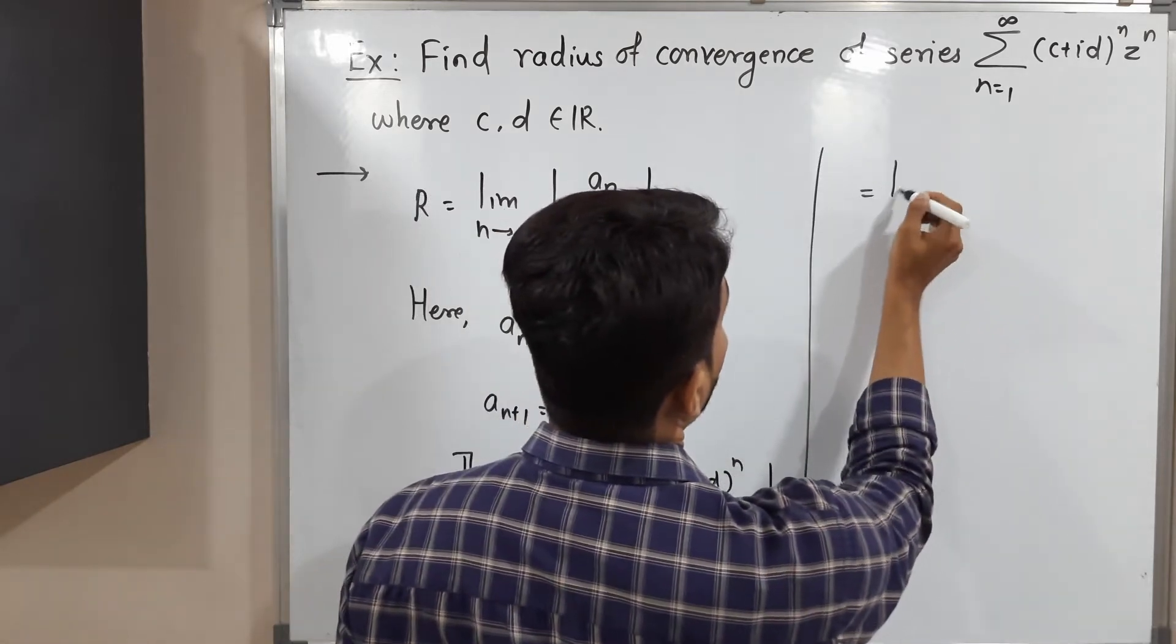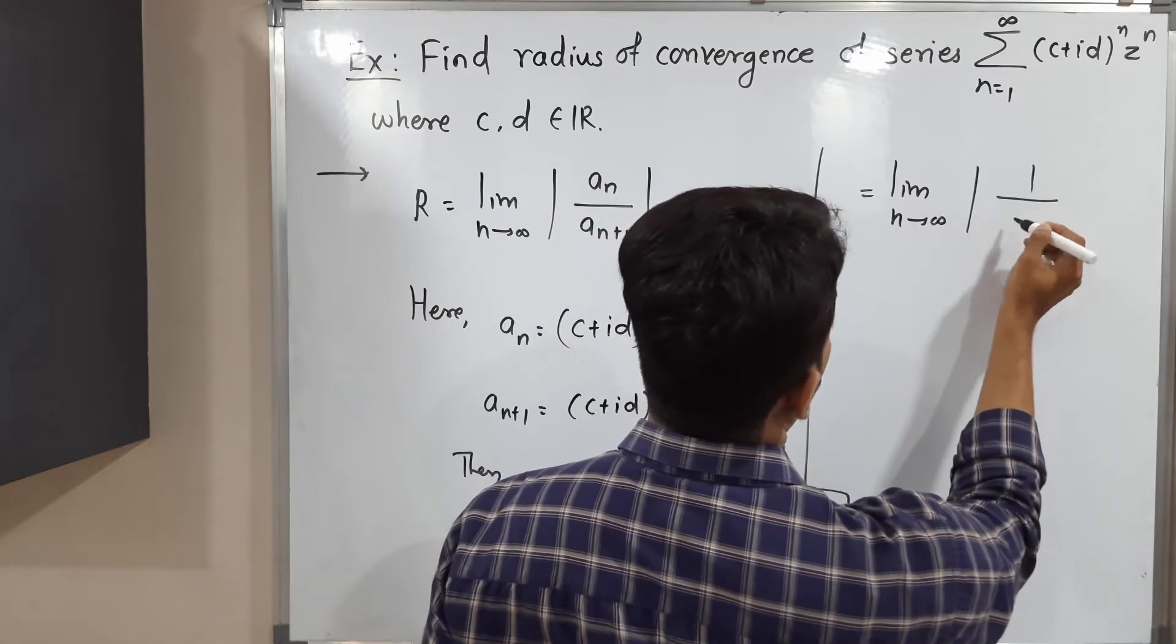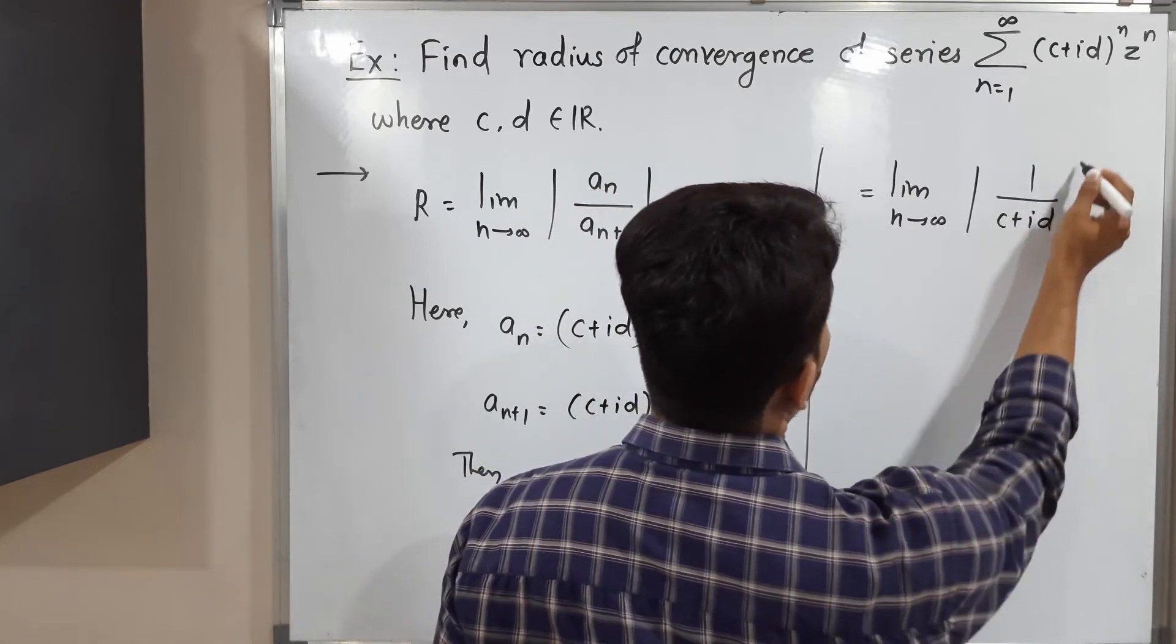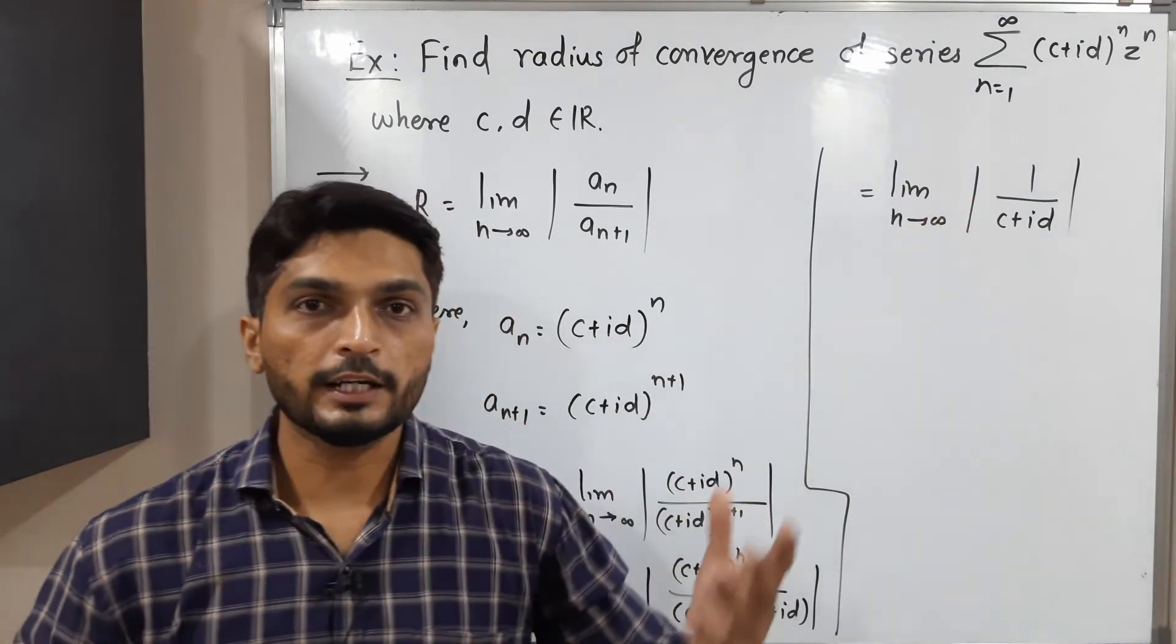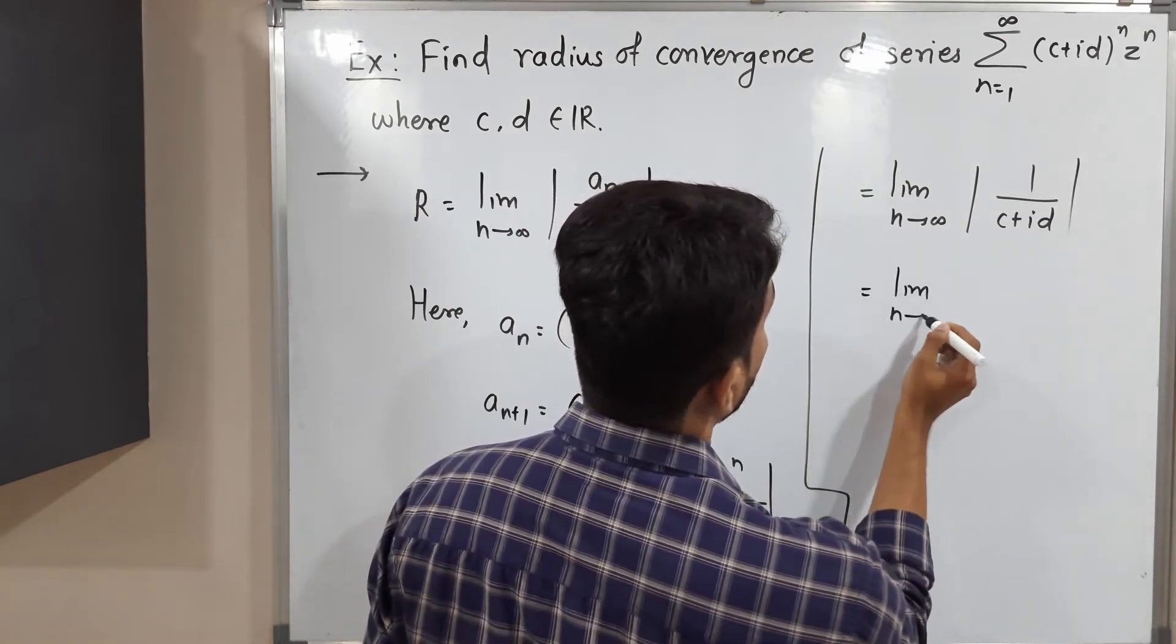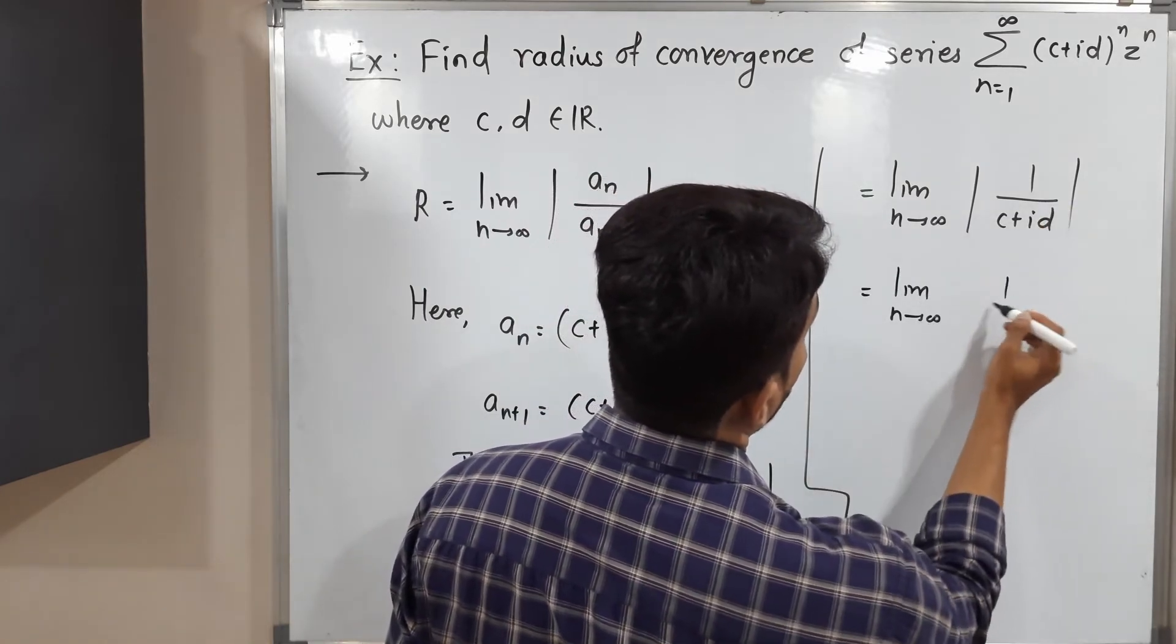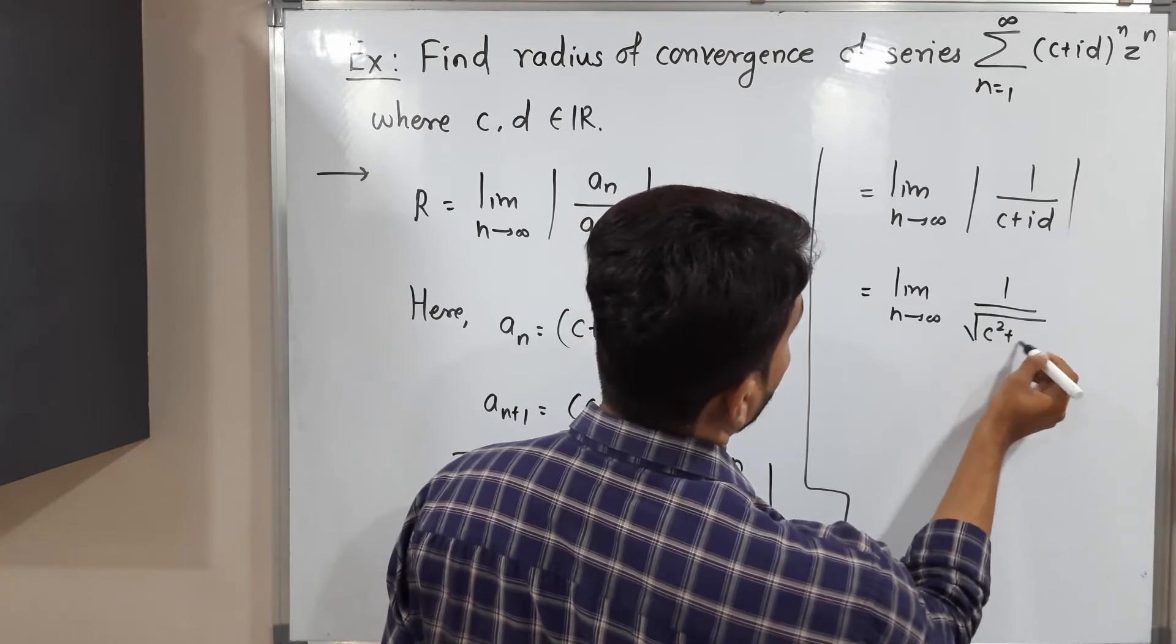You know that when we are taking mod, numerator and denominator we can take separate mod. This is equal to limit n tends to infinity, mod of 1 is 1, and mod of (c plus id) is the square root of c squared plus d squared.